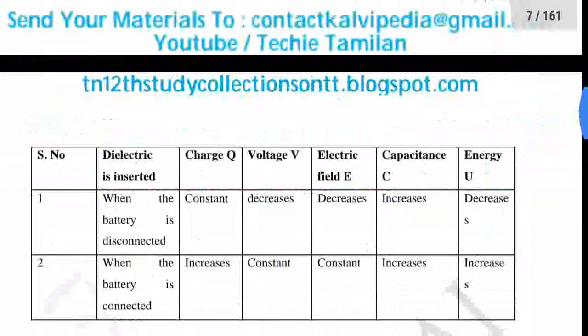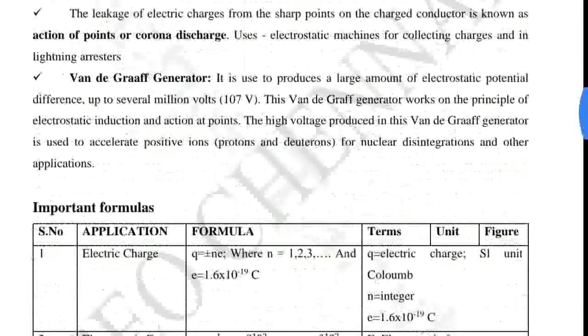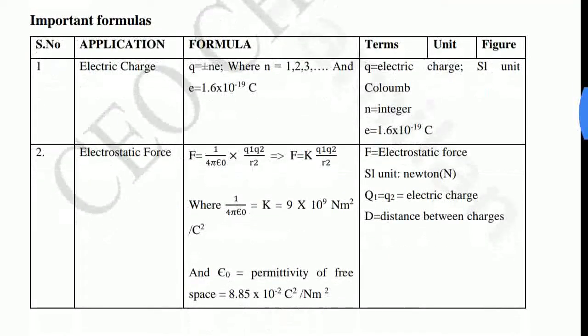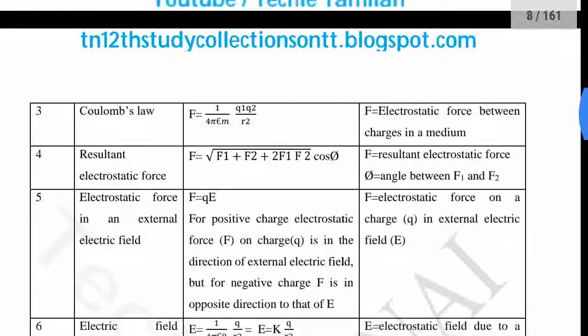If you have a first card, you can use the first card. If you have a point, you can use the important formula. So, if you have a new version, you can use the column. You can use the formula, the farm, the term, the unit, the unit and the SI figure. You can use all the details. You can learn very simple.